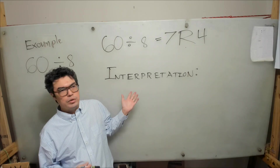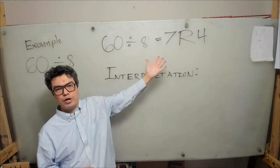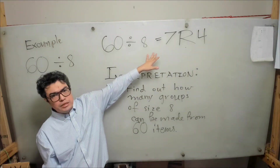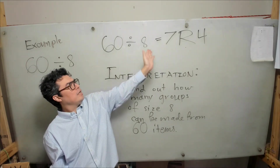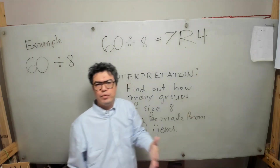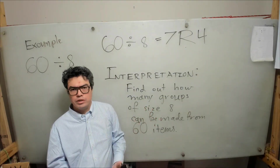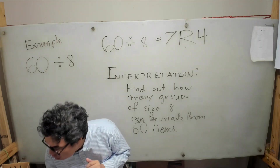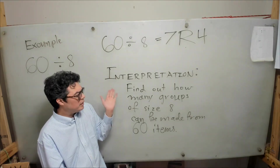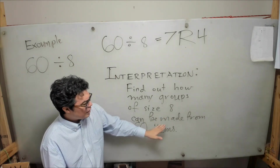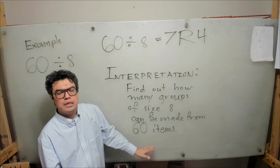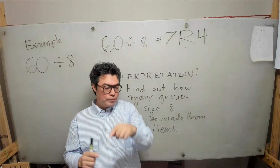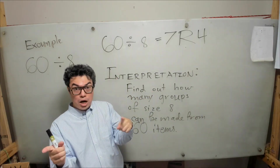Now we want to figure out an interpretation. What does this result mean? What does 60 divided by 8 equals 7 remainder 4 mean in a practical sense? One interpretation is that we want to find out how many groups of size 8 can be made from 60 items. The 60 items could be 60 people I'm going to invite to a party.